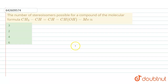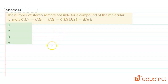Hello students. The question says: find the number of stereo isomers possible for a compound of molecular formula CH3-CH=CH-CHOH-CH3. The options are: A) 3, B) 2, C) 4, and D) 6.